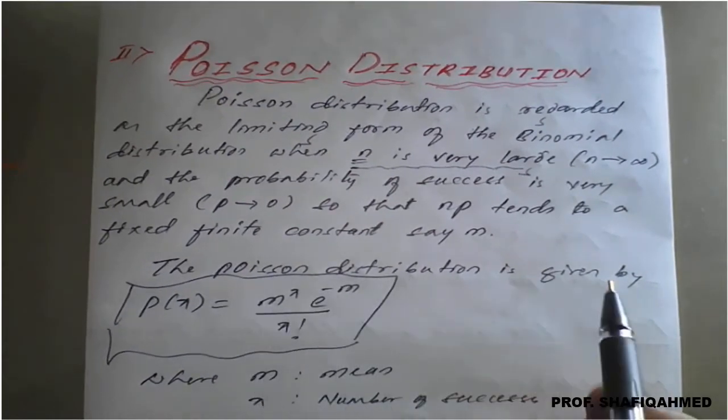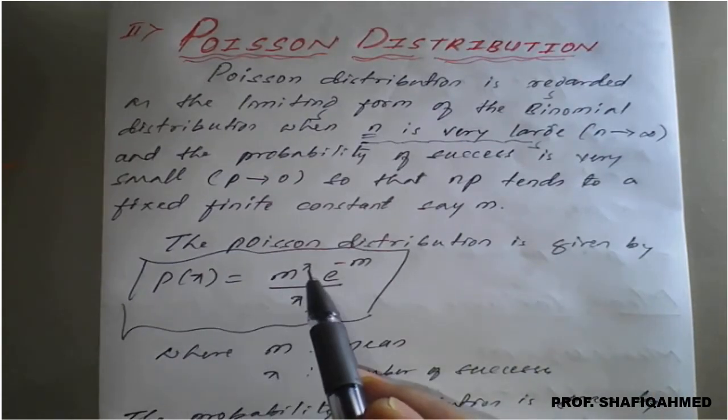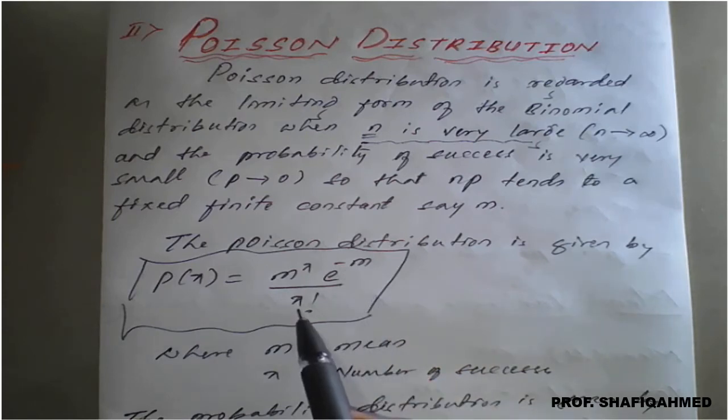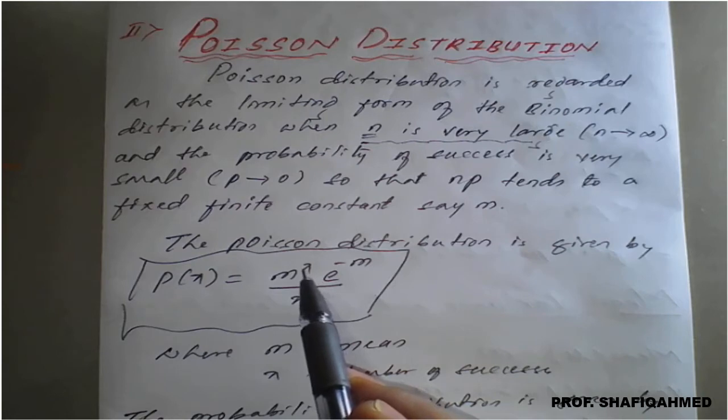The Poisson distribution is given by P(x) equals m raised to x, e raised to minus m, divided by x factorial. Here, m belongs to mean of the given distribution, and x is nothing but number of trial successes.